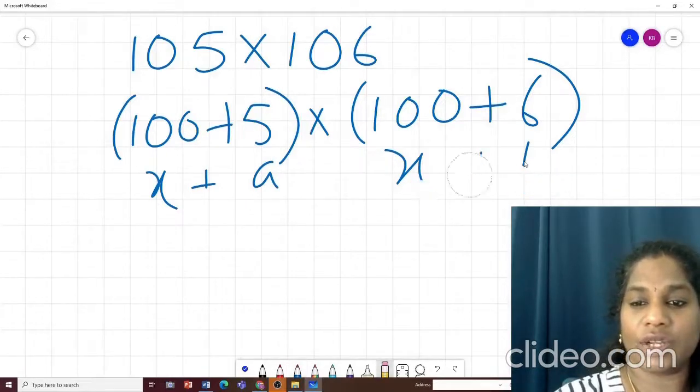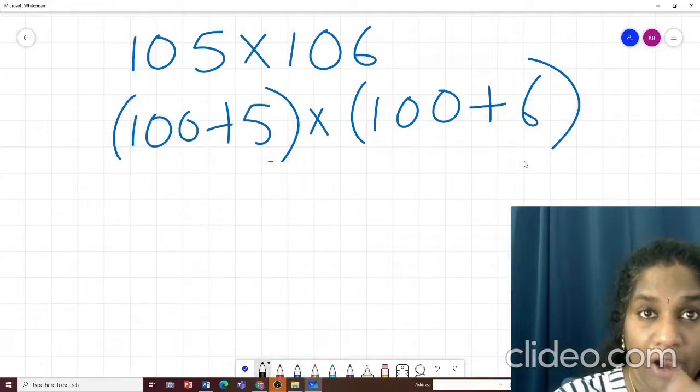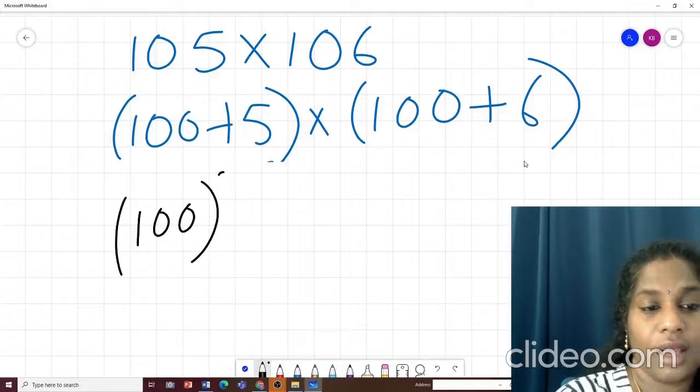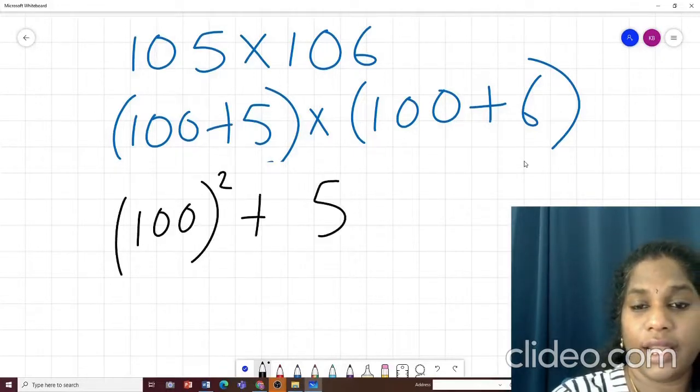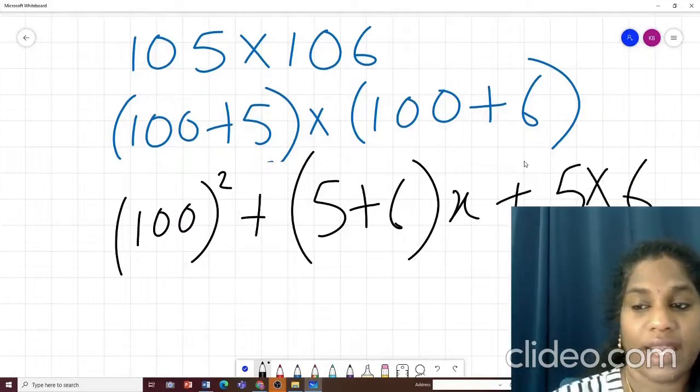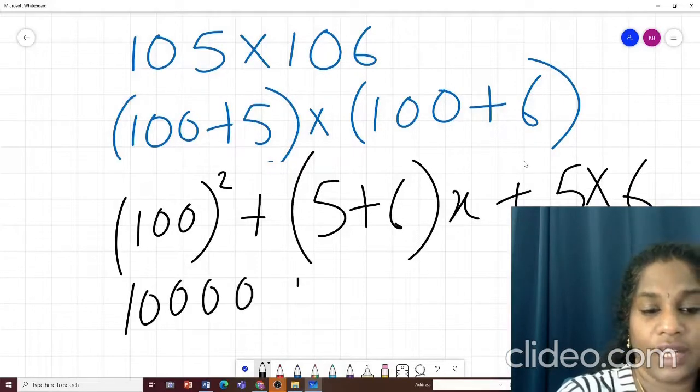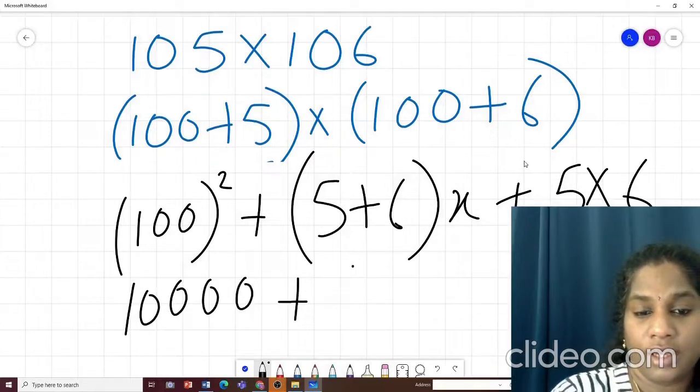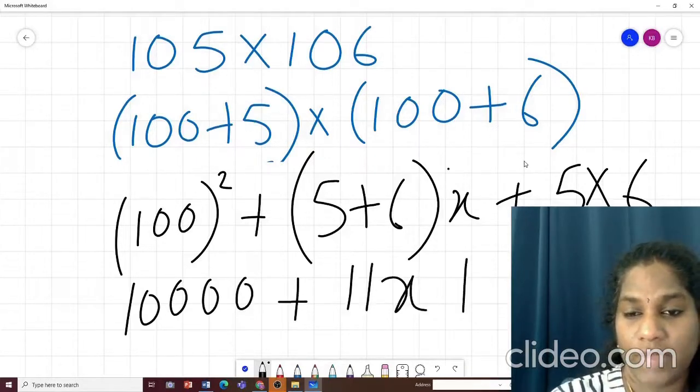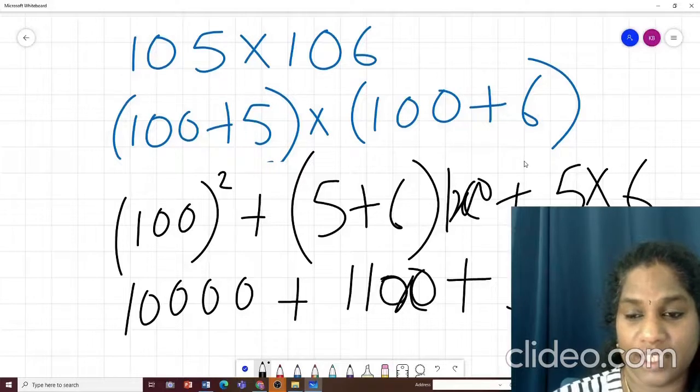This is how we find it. So let us go ahead and apply the formula instead of doing it. How will we apply the formula? What is it? X square plus A plus B into X plus A into B. X was 100. So this will become 10000 plus 1100. Plus 5 into 6, 30. So how much is it?